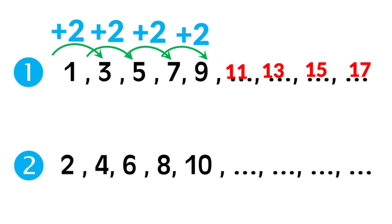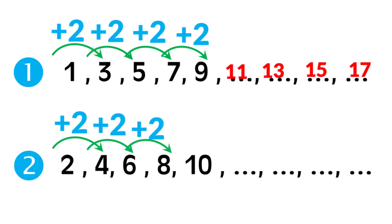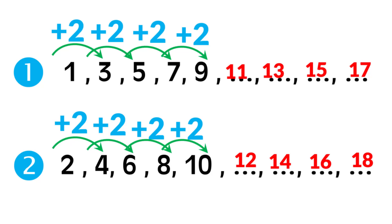Fifteen plus two equals seventeen. So the pattern is: one, three, five, seven, nine, eleven, thirteen, fifteen, seventeen. Number two: two, four, six. Two plus two equals four. Four plus two equals six. Six plus two equals eight. Eight plus two equals ten. Ten plus two equals twelve. Fourteen plus two equals sixteen. Sixteen plus two equals eighteen. The pattern is: two, four, six, eight, ten, twelve, fourteen, sixteen, eighteen.